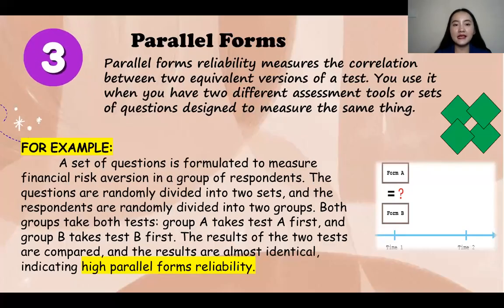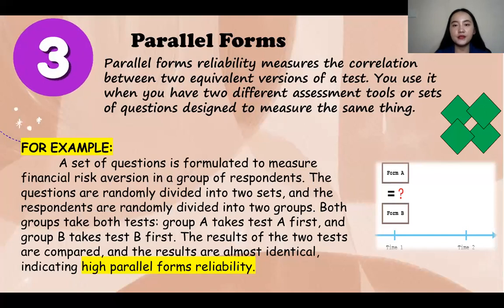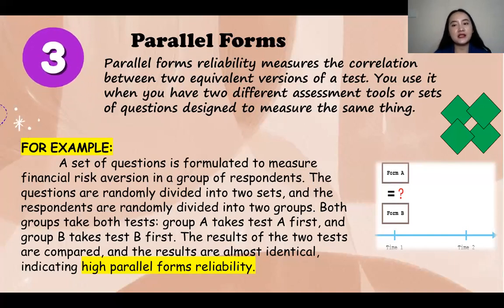Next is parallel forms. Parallel forms reliability measures the correlation between two equivalent versions of a test. So when you have two different assessment tools, for example, or sets of questions designed to measure the same thing.